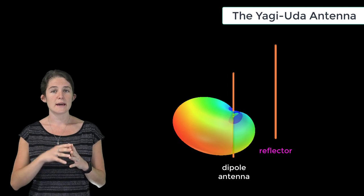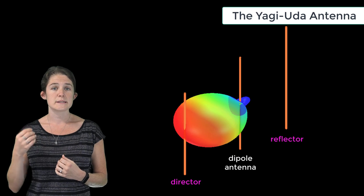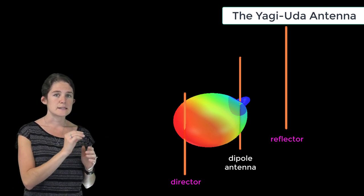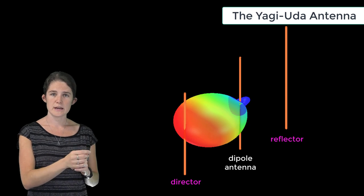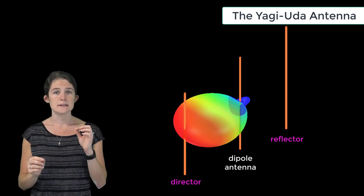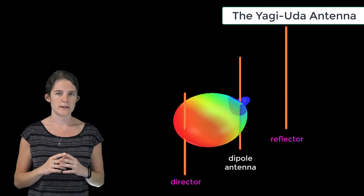If we then add a second element on the opposite side of the dipole from the first, where the second element is slightly shorter than the dipole, we can see that the effect is an increased focusing of the radiation pattern. This model with a single reflector and a single director has a stronger maximum directivity than the model with only the reflector.